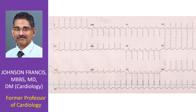In this case, no features of flutter waves are evident. Instead, there is a suggestion of a retrograde P wave at the end of the QRS in inferior leads. This qualifies for the description of short RP tachycardia. Two important differential diagnoses of short RP tachycardia are AVNRT and AVRT.